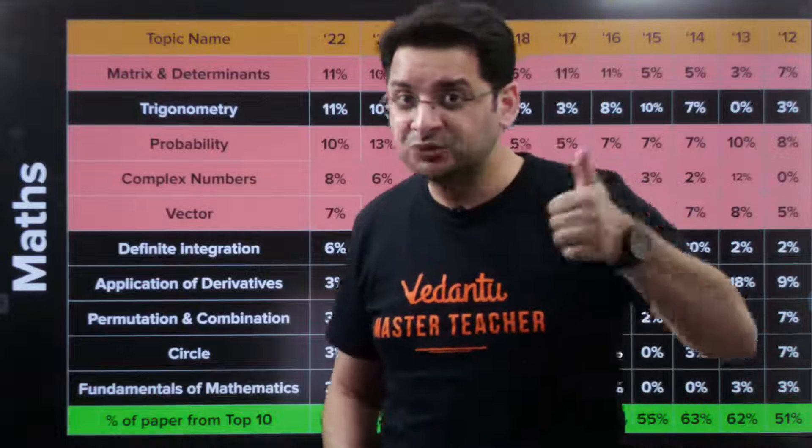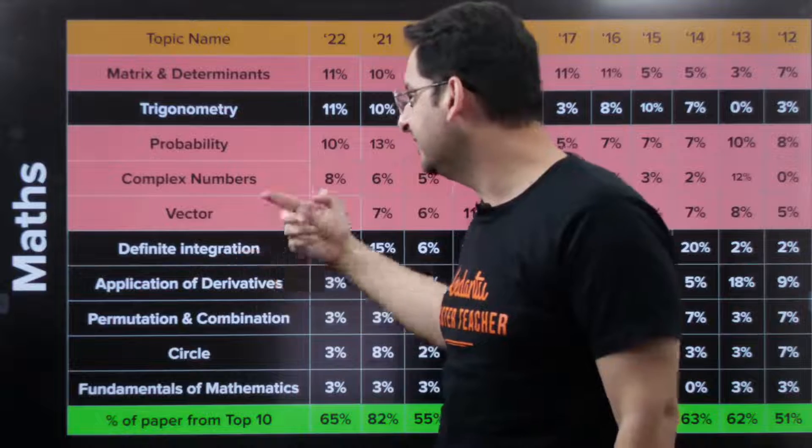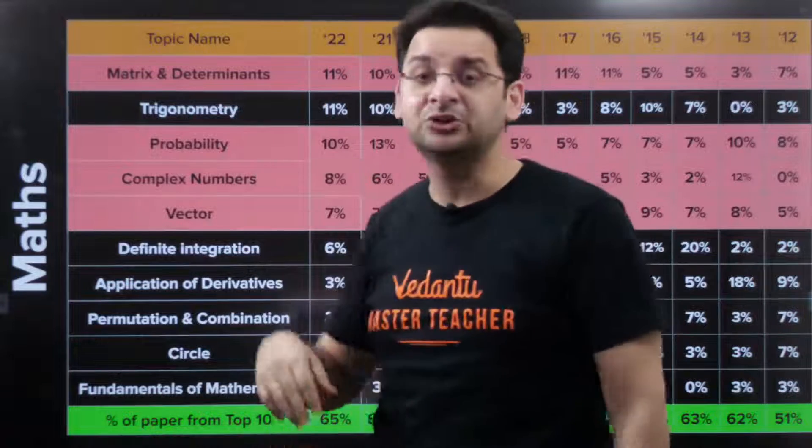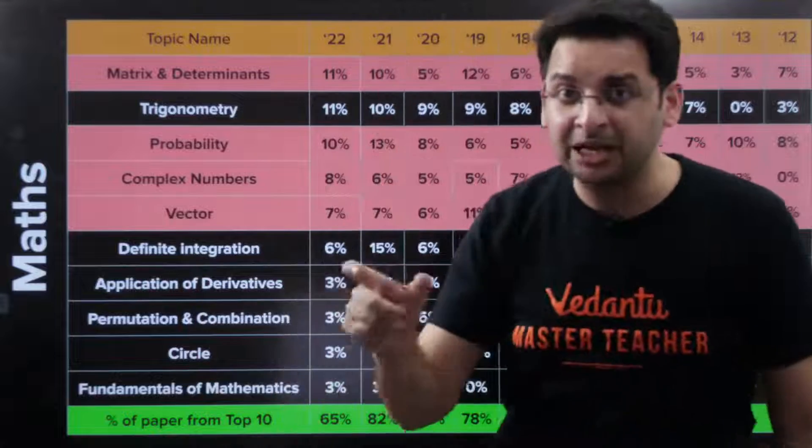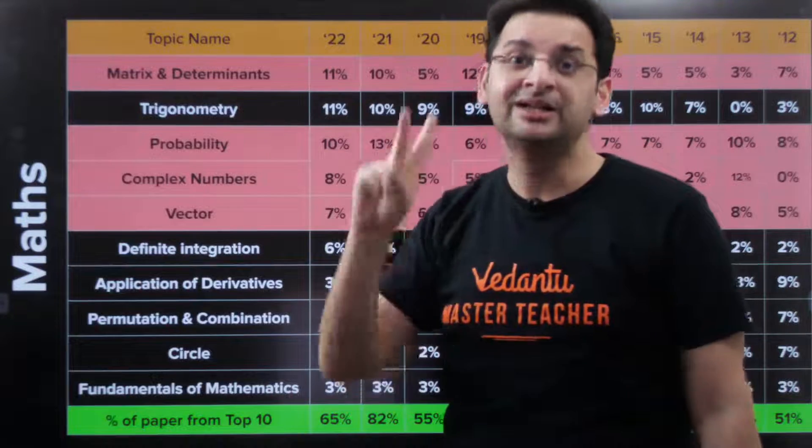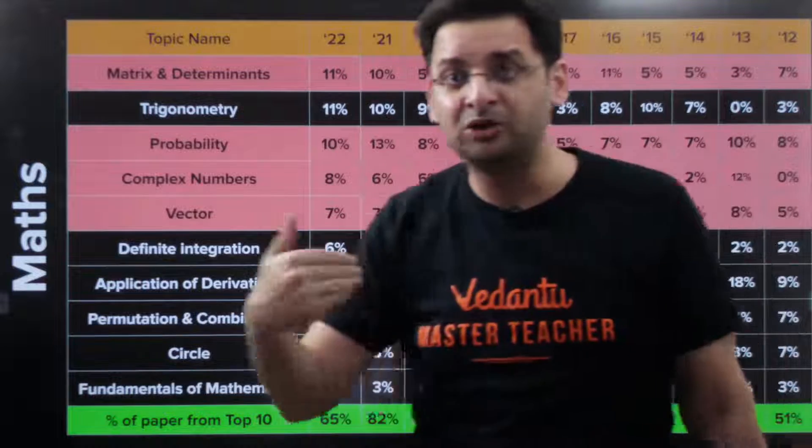If you talk about class 12 topics, matrices and determinants, probability, vectors in 3D, definite integration, AOD, these are all class 12 topics. These are the topics that you need to put a lot of attention to, particularly the topics which are covered at the end, which is probability and vectors in 3D. Because you tend to ignore these topics because the syllabus is about to get completed and you are mostly focusing on first attempt of JEE Mains.